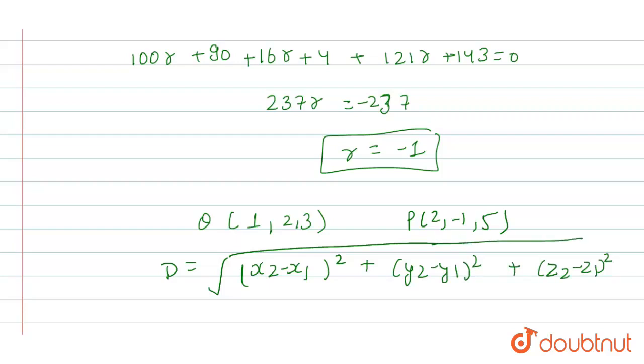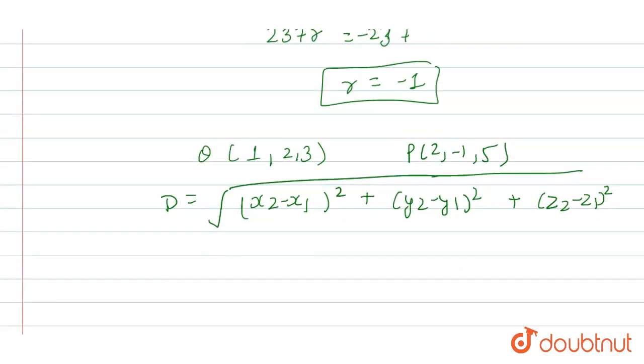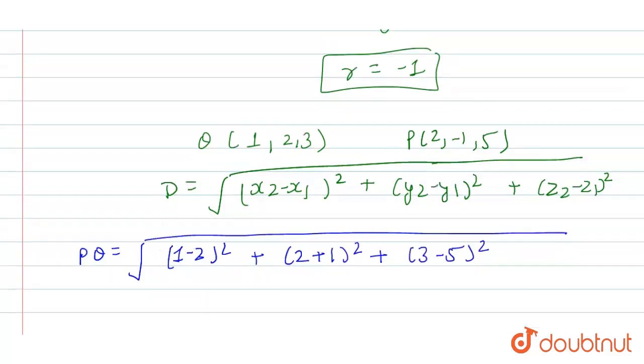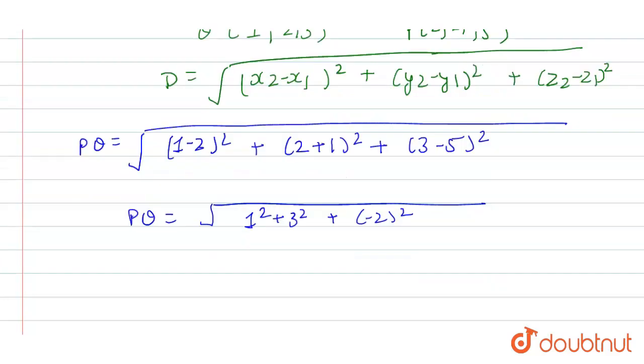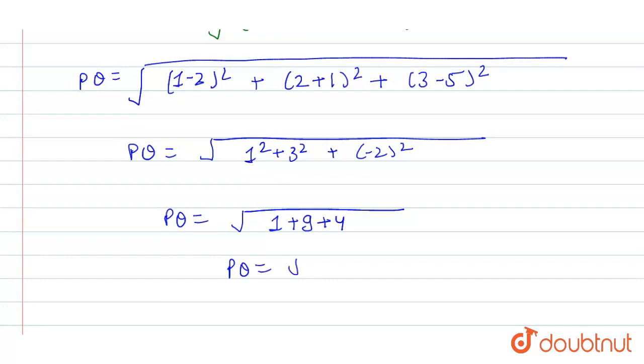This is our distance formula. So we will use this, so our PQ will become PQ = √[(1-2)² + (2+1)² + (3-5)²]. So from here we get PQ = √(1 + 9 + 4). So we get PQ = √14.